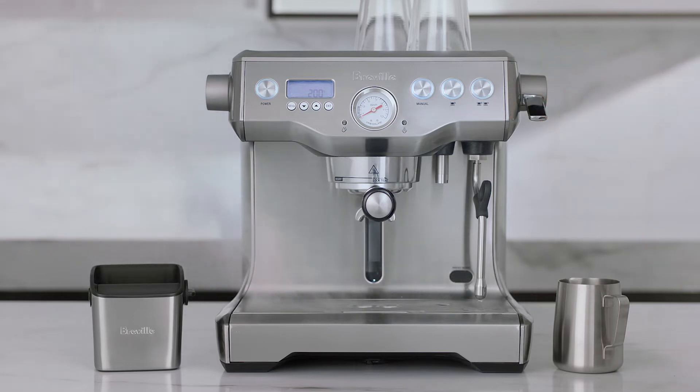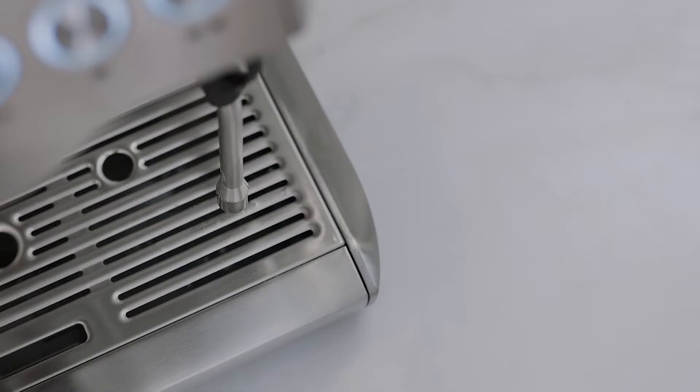Lower the steam lever or turn the steam dial to the upright position. Then, insert the steam wand into the jug directly down the spout line of the jug.